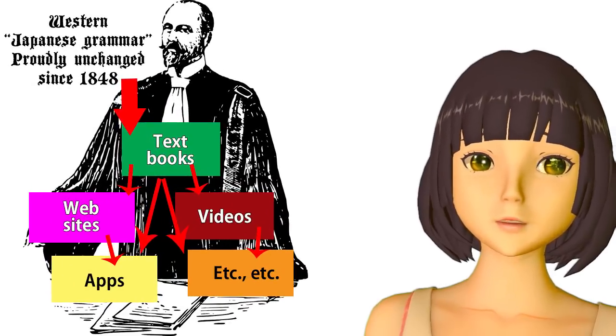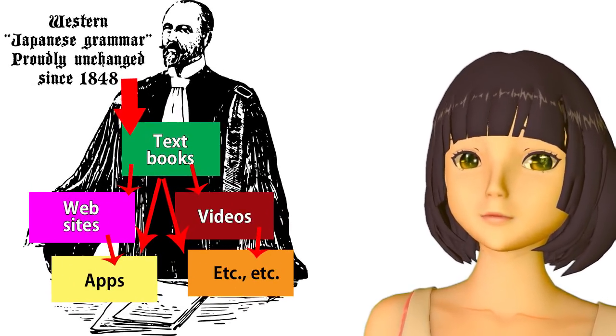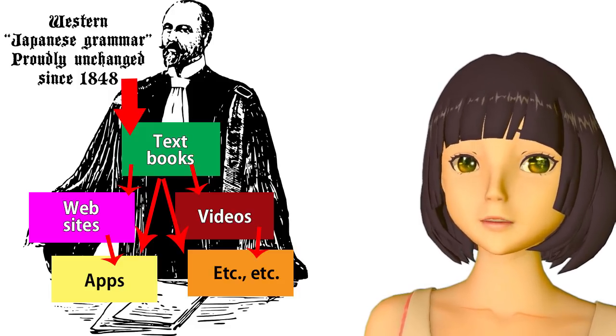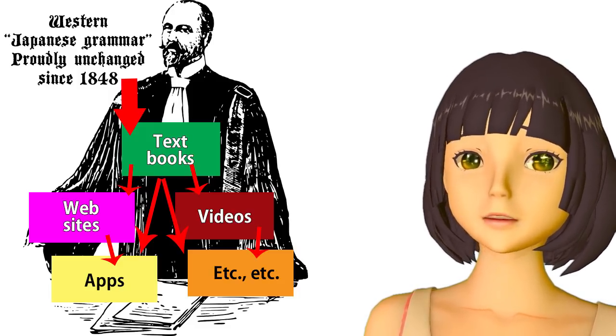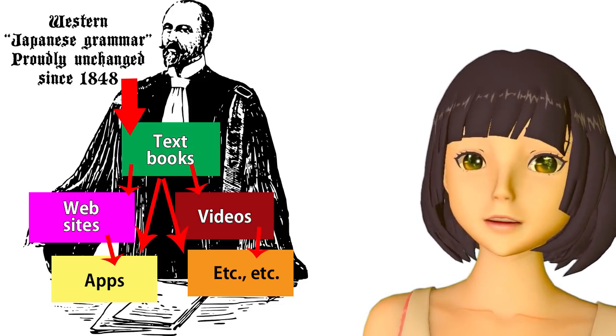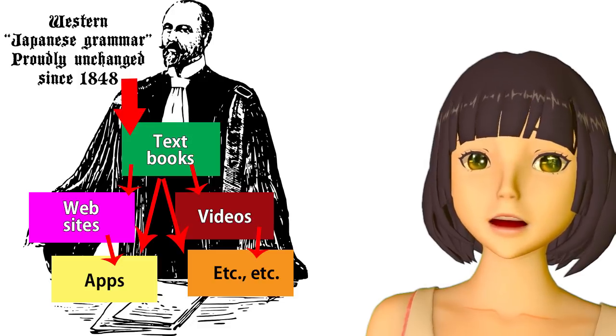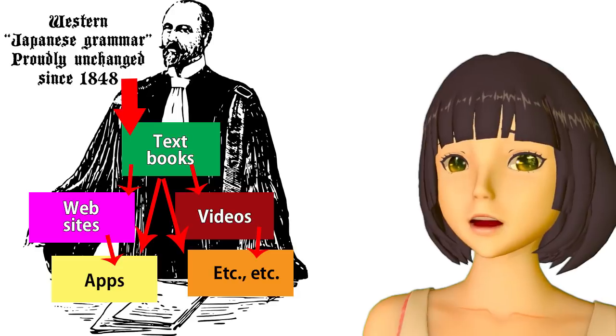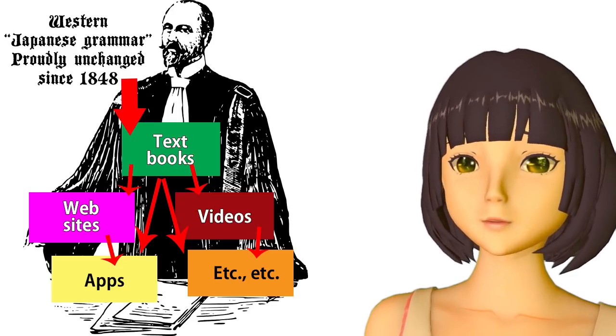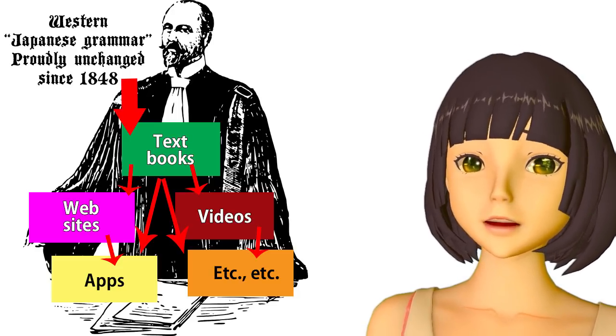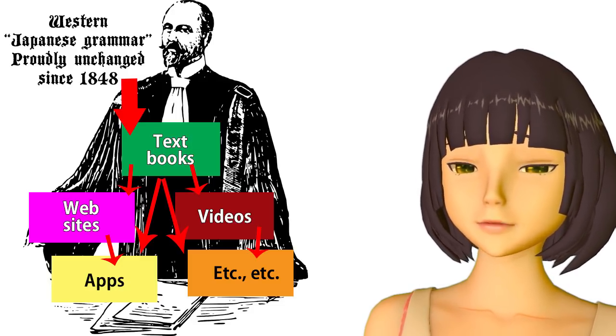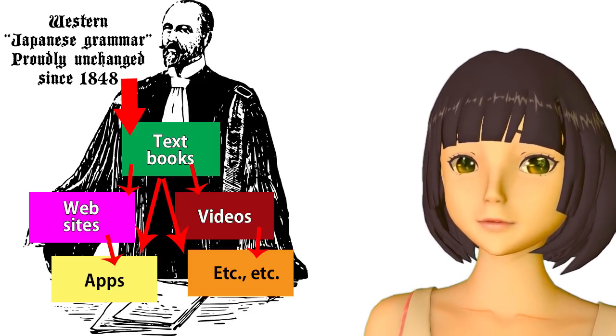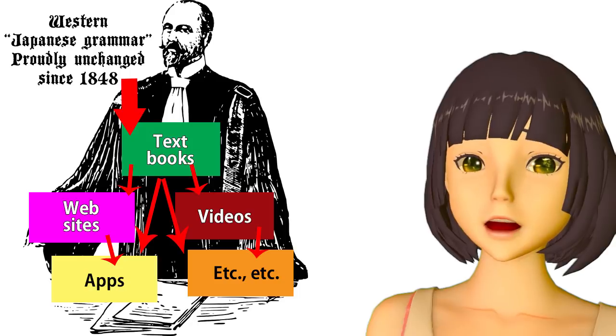Conventional eihongo Western Japanese grammar really hasn't changed since hundreds of years ago when Western people started imposing classical European grammar on the Japanese language in an attempt to explain it to other Western people. And these explanations are enshrined in the most prestigious places. They're taught in universities by people with strings of letters after their names.